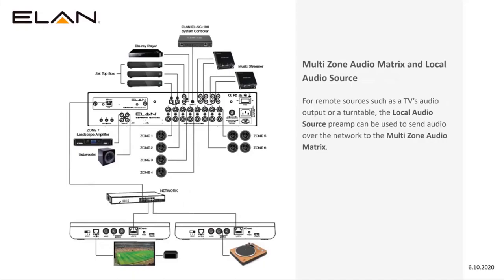Here are a couple of use cases for the local audio source. As long as it's connected to the same network as the other boxes, you're able to add it as an additional source to the audio over IP products. A turntable, for example, wouldn't do too well located at the rack. And placing a unit behind the TV is a pretty common scenario. Once connected to the network, the local audio source will send that audio back to any zone that can see it.